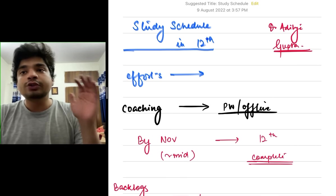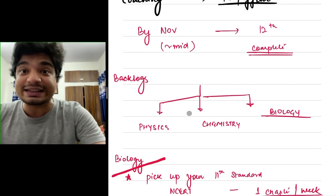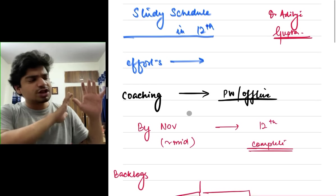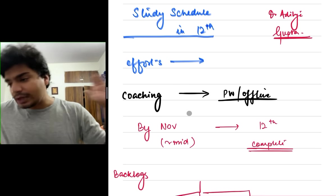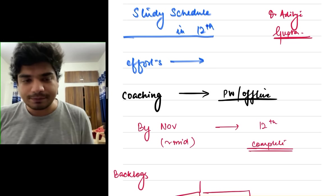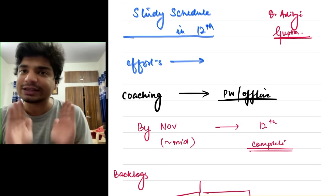50% syllabus is 12th. So irrespective of whichever coaching that you are joining, they will try to finish the syllabus at least by November end or November mid. So you just keep on doing what the coaching is doing and try to finish the syllabus by November end or November mid.